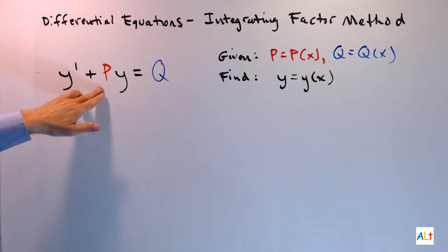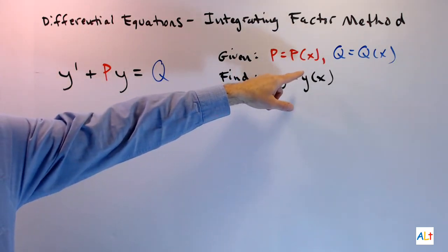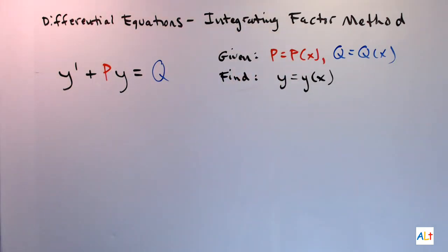So, here we have a P and a Q. P and Q cannot be functions of Y. They can be functions of X, they can be constants, or they can be zero. And this method will work in all of those cases.